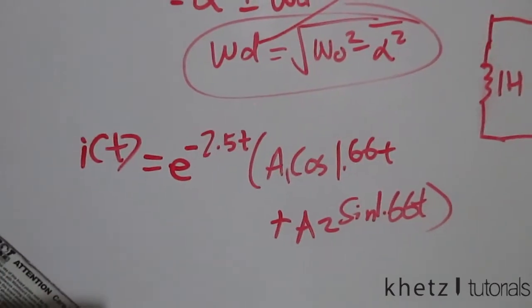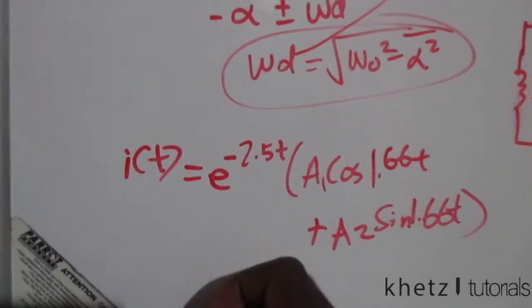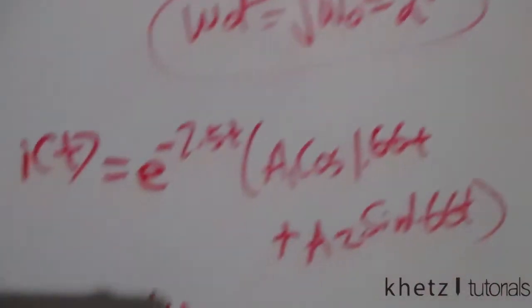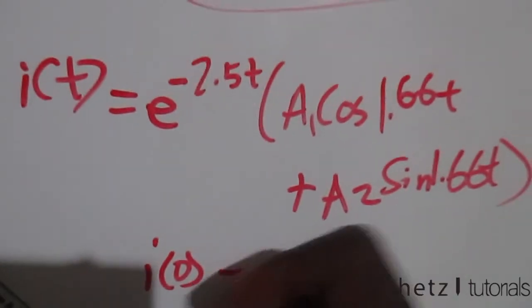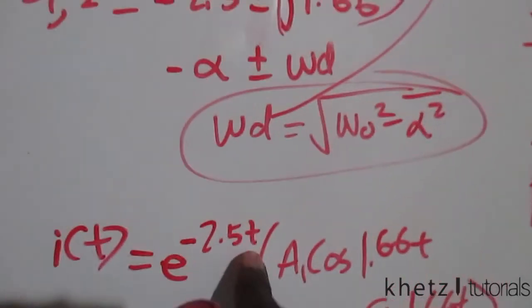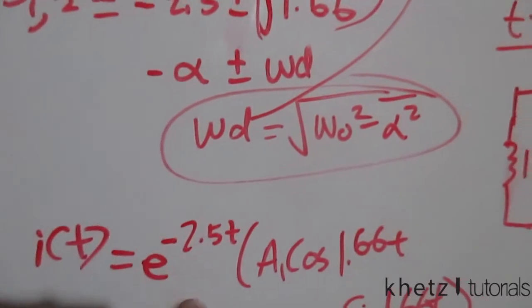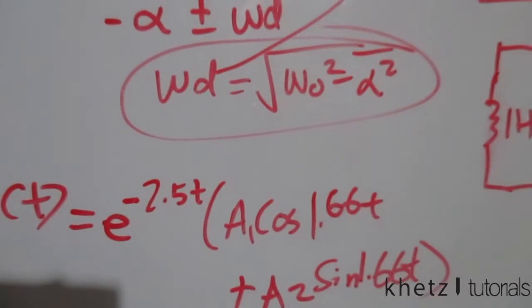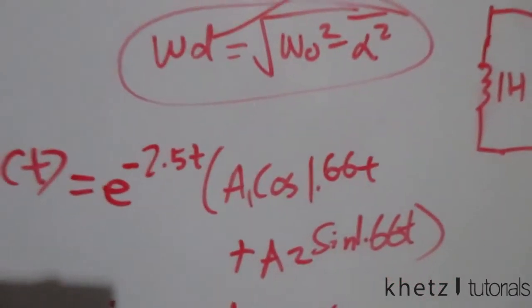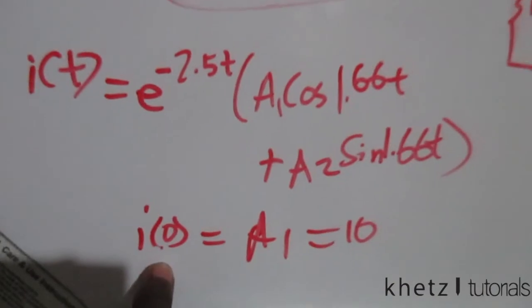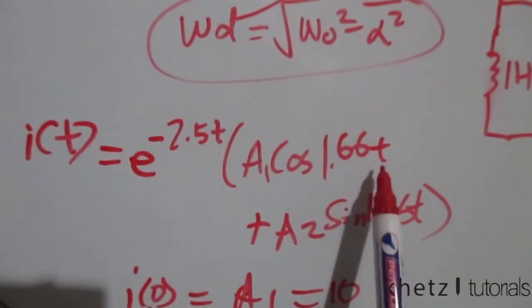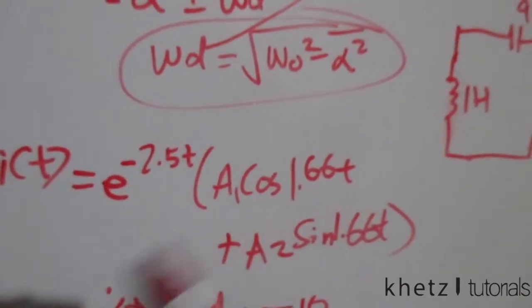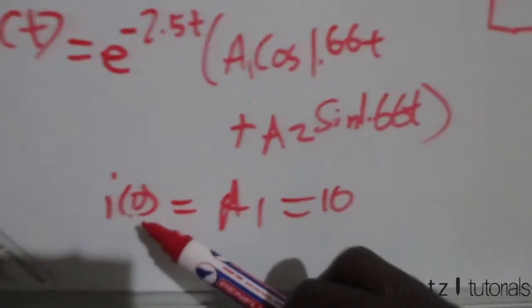Using the first initial condition i(0) = 10 A: substituting t=0 into the general formula, e⁰=1, cos(0)=1, sin(0)=0, so A₁ = 10.